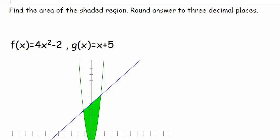Yes, we're going to write it down. What do we got going on here? We got f of x is equal to 4x squared minus 2. And g of x is equal to x plus 5.